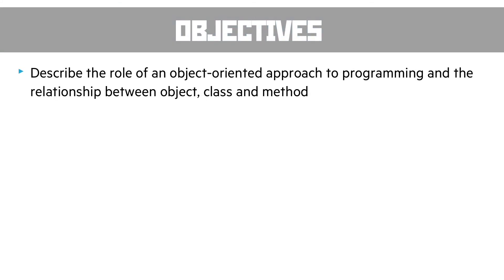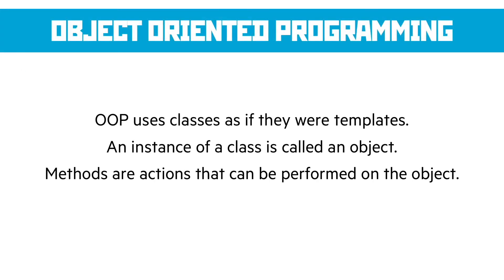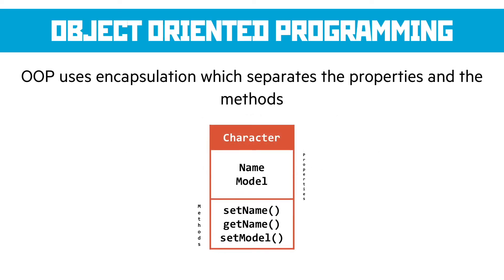The next objective is describing the role of OOP — the object-oriented approach to programming and the relationship between objects, classes and methods. Object-oriented programming uses classes — think of a class as a template, the design for how something should work and look. When we create an instance of that class we're making an object, which is a working instance that can be used and manipulated. Methods are actions that can be performed on the object and properties are the data stored by the object. OOP uses encapsulation, which separates the properties and the methods so that other objects can't directly change the properties of another object — they have to go through the methods, meaning there's code associated with changing properties.